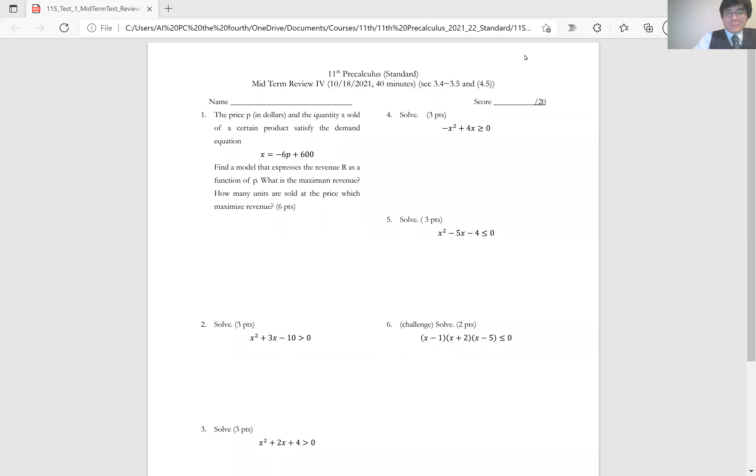Number one: the price p in dollars and the quantity x sold of a certain product satisfies the demand equation x equals negative 6p plus 600. Find the model that expresses the revenue as a function of p.